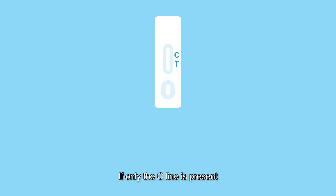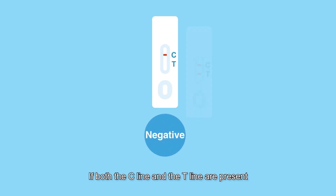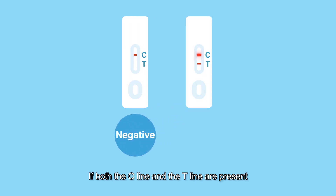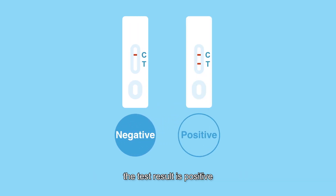If only the C-line is present, the test result is negative. If both the C-line and the T-line are present, the test result is positive.